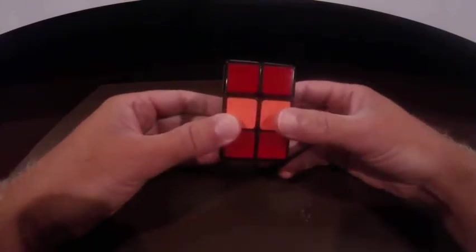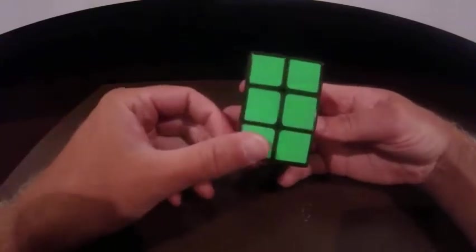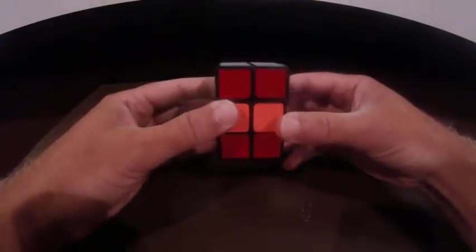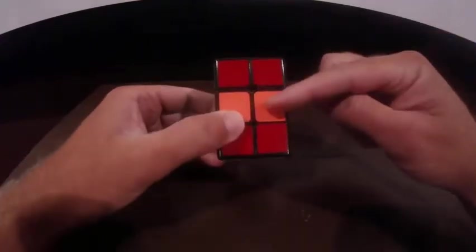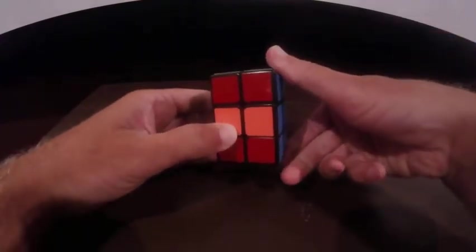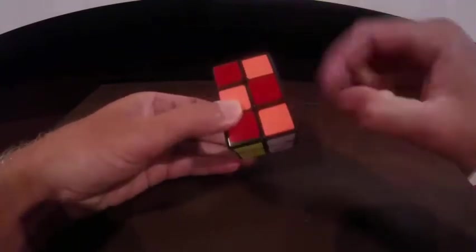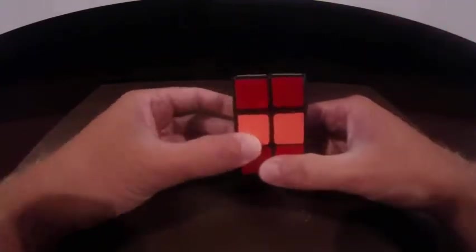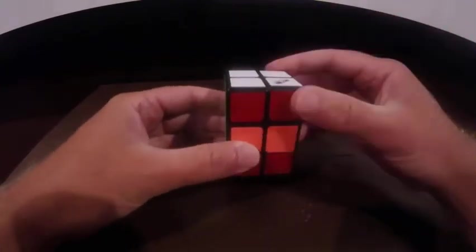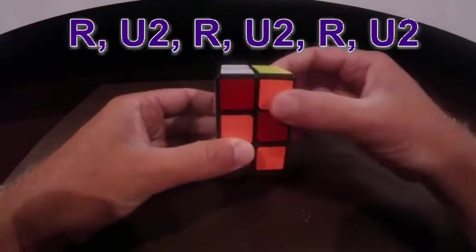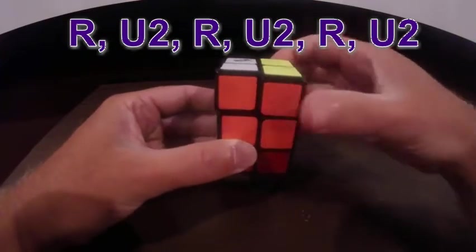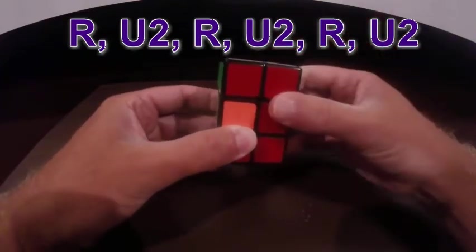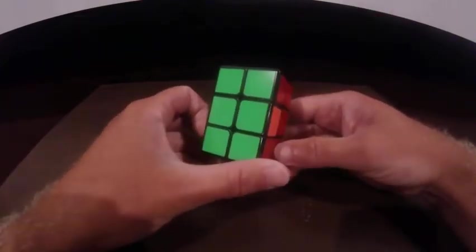All right, so once you have a face that's solved, you want to again hold it to your left and then we're going to do an algorithm that's going to switch these two. So basically, it's going to do this, but it's not going to mess up the top and bottom layer. All right, and it's real simple. You're going to do right, up twice, right, up twice, right, up twice. Now we see what we have.